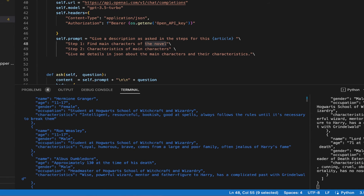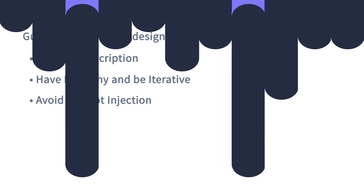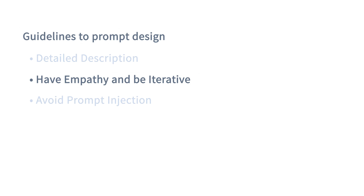Details can also be described in the form of few-shot prompting, but that itself can become its own episode, so do expect a future video on few-shot prompting from Raza. The second point is: have empathy and be iterative. With that we mean: focus only on the aspects relevant to the audience. Since we gave the word 'novel' in the previous example, the model related that we are trying to find the main characters in the novel and not the article, so we were able to focus on the relevant information.